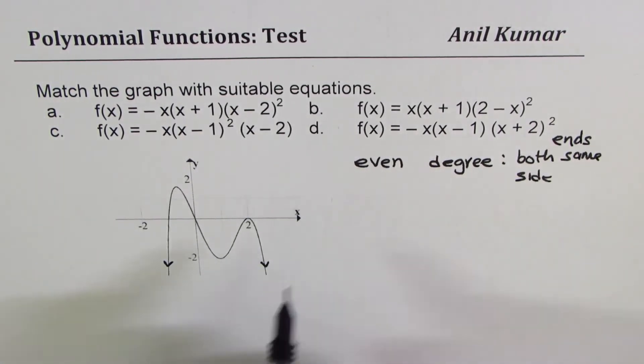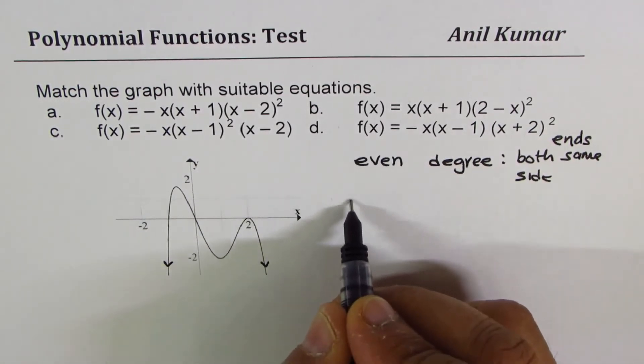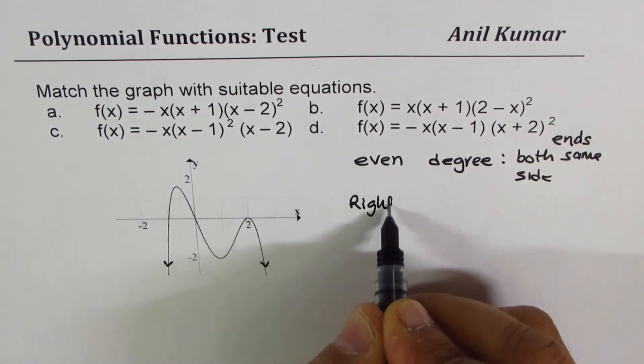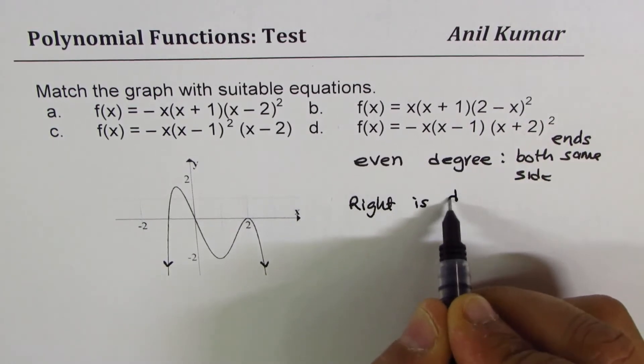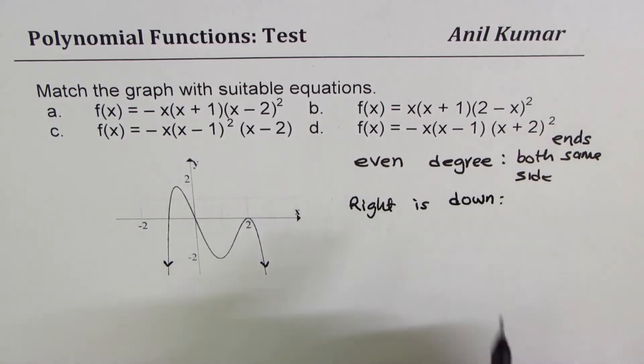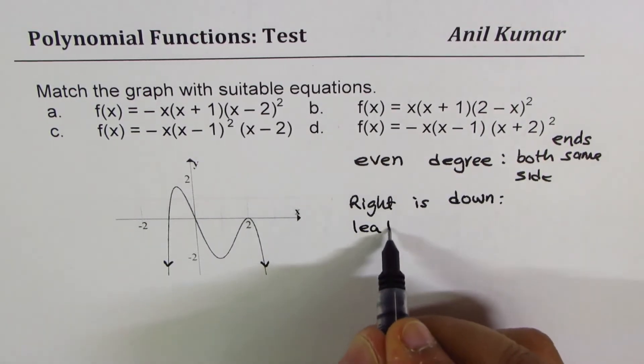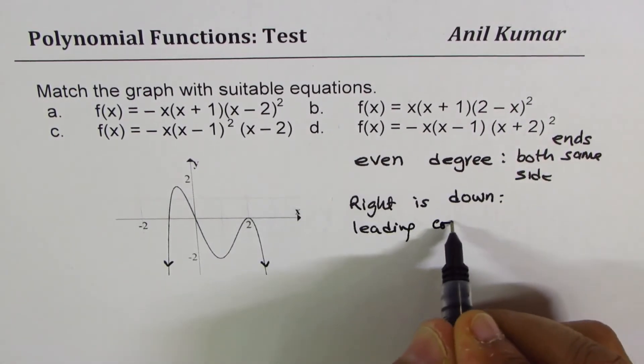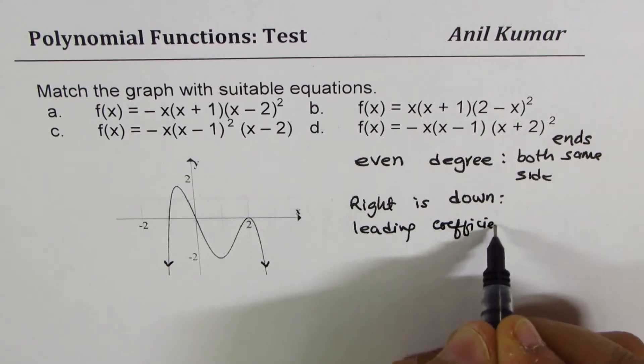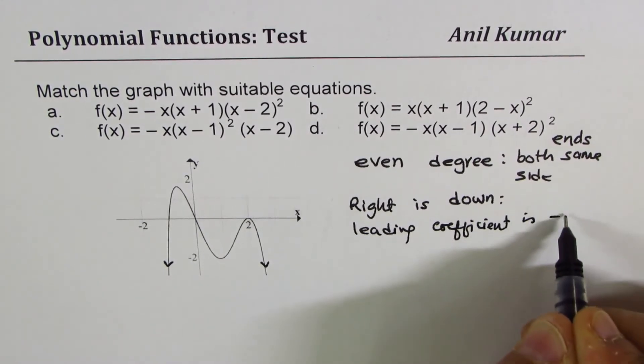Second, because the right side is down, it means the leading coefficient is negative.